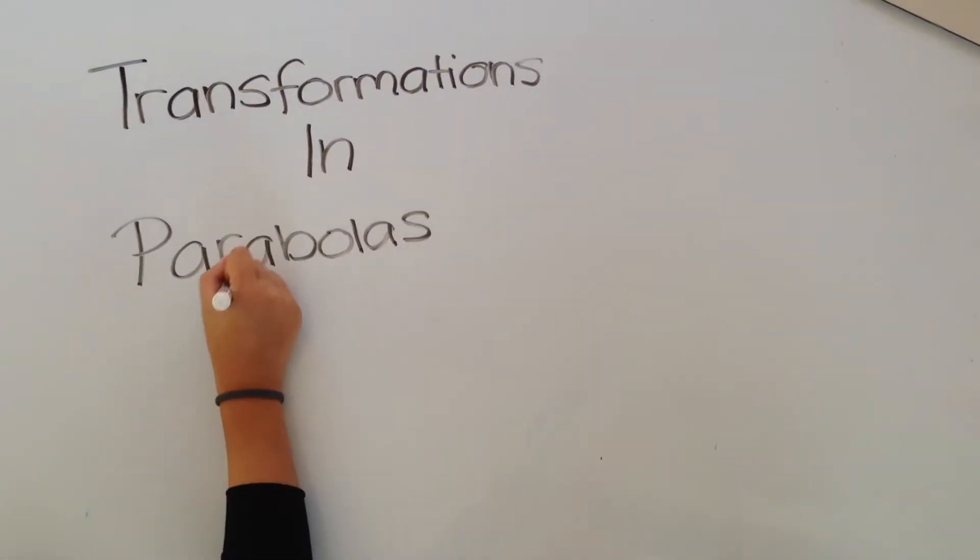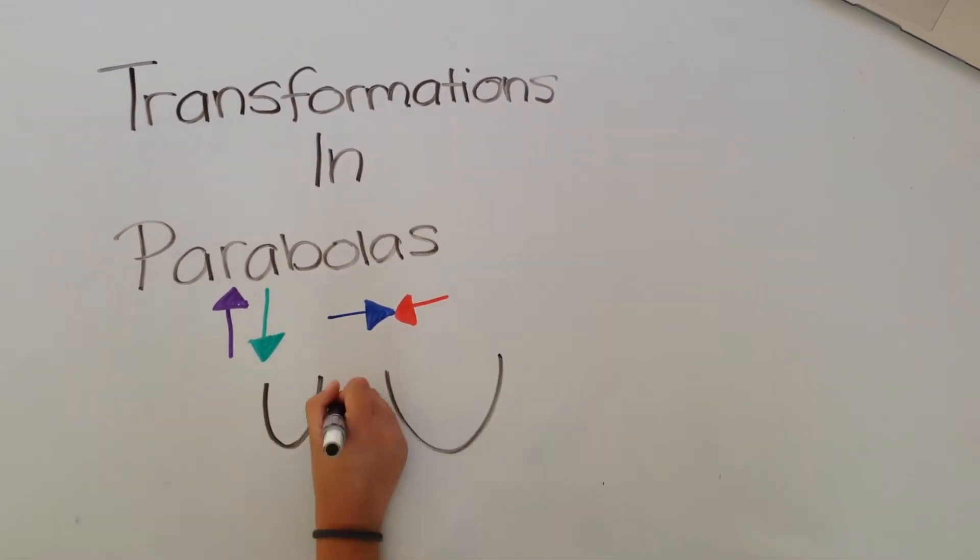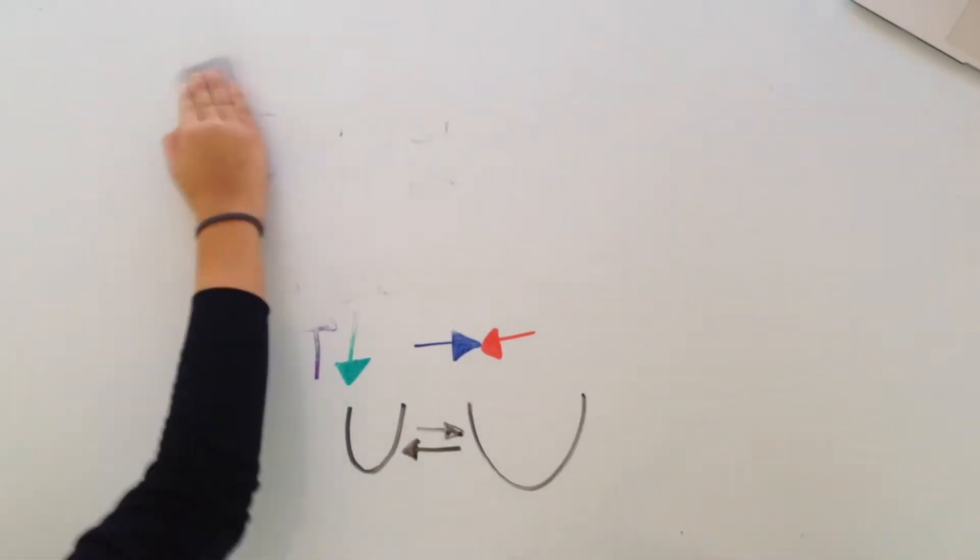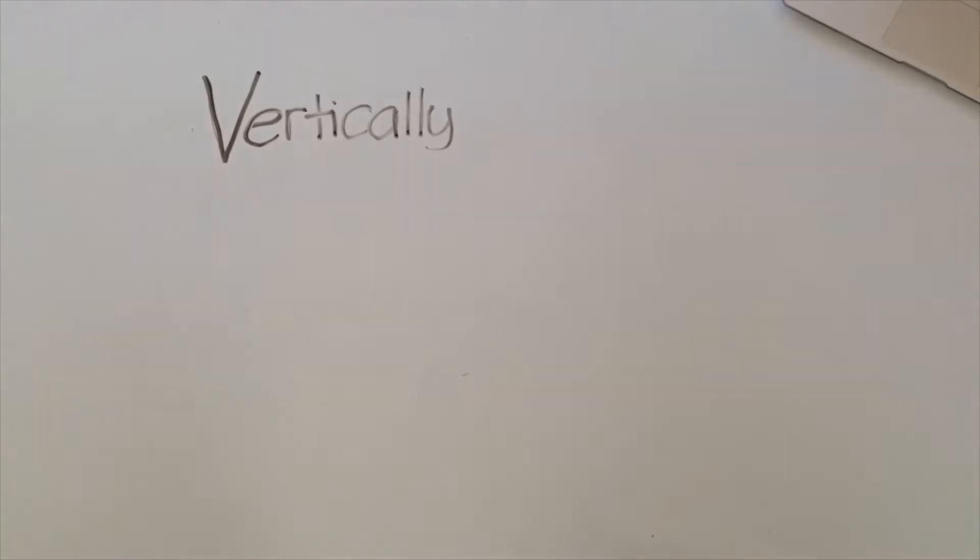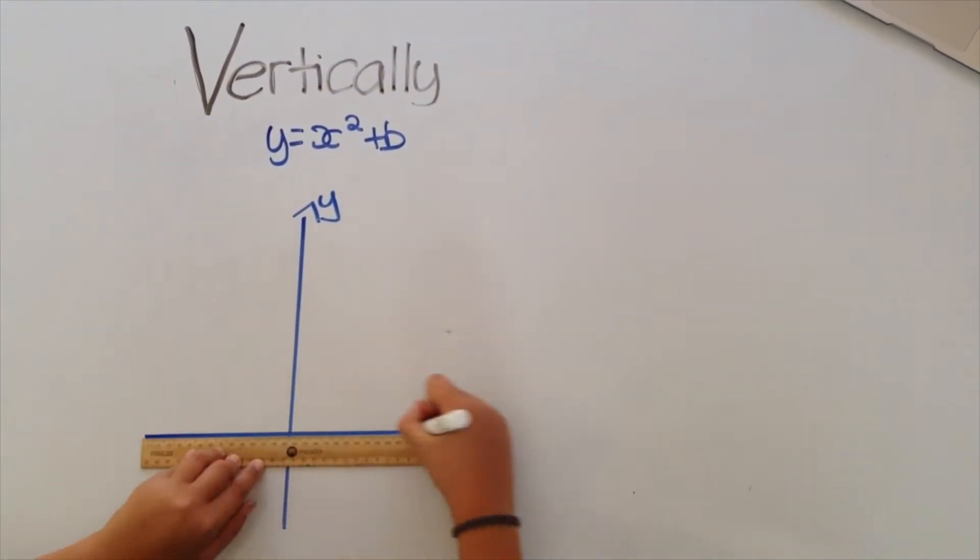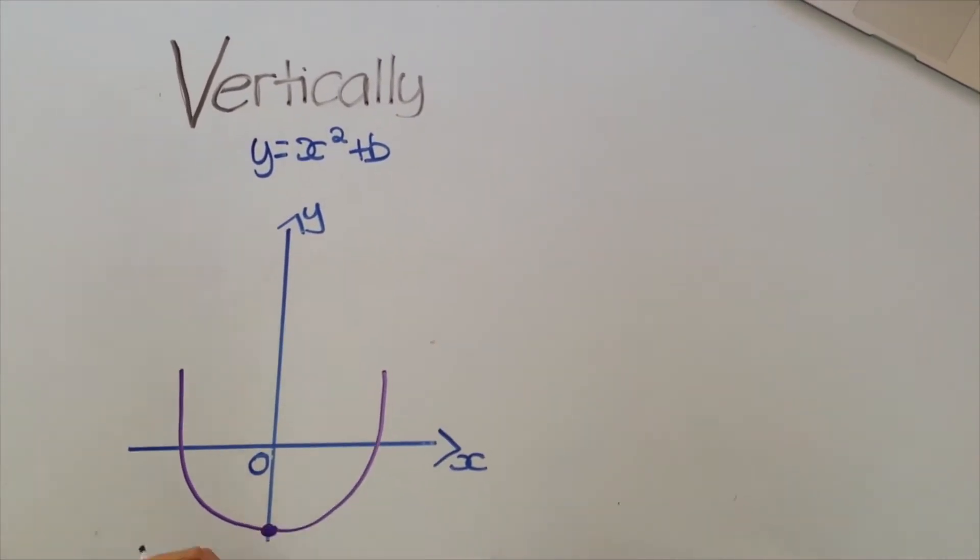We can very simply translate parabolas vertically and horizontally to produce a new parabola. To move a parabola vertically, we use the formula y equals x squared plus v. This means the vertex is now located at zero comma v. If v is positive, the parabola moves upwards. If v is negative, the parabola moves downwards.